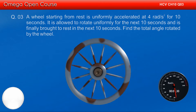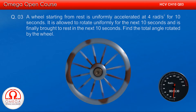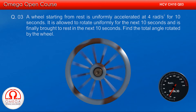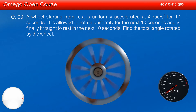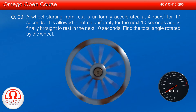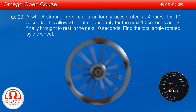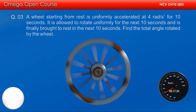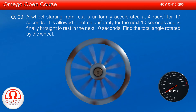A wheel starting from rest is uniformly accelerated at 4 radians per second squared for 10 seconds. It is allowed to rotate uniformly for the next 10 seconds and is finally brought to rest in the next 10 seconds. Find the total angle rotated by the wheel.